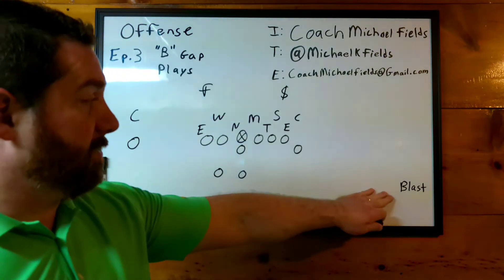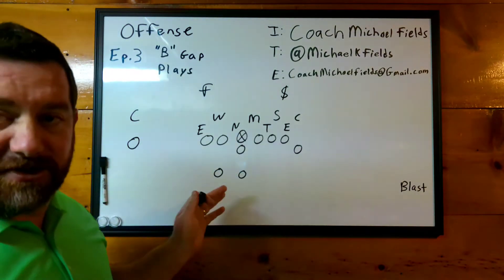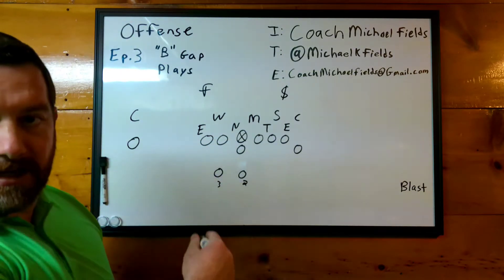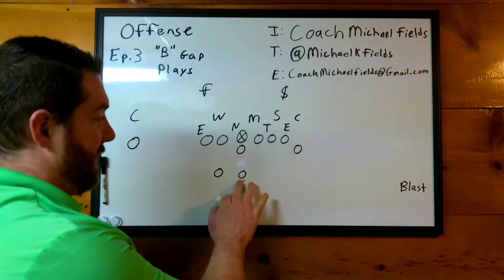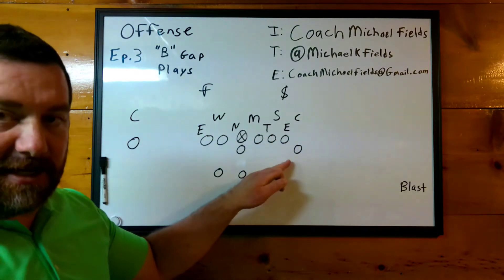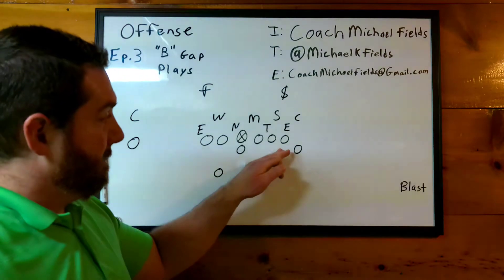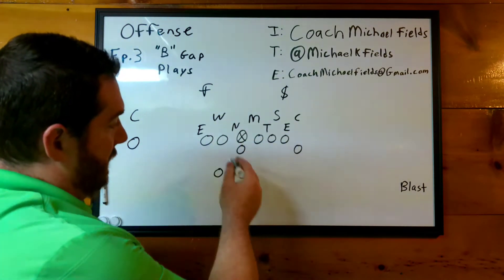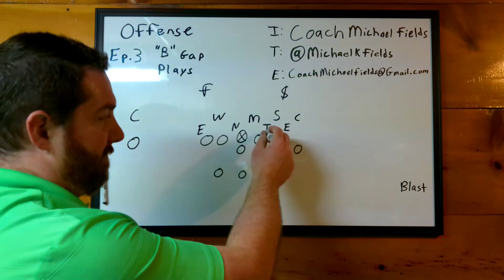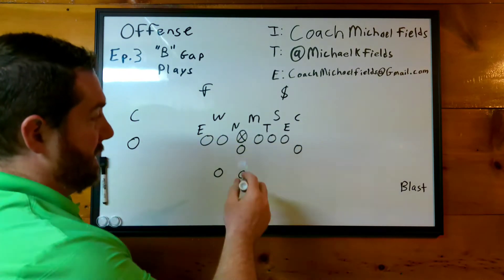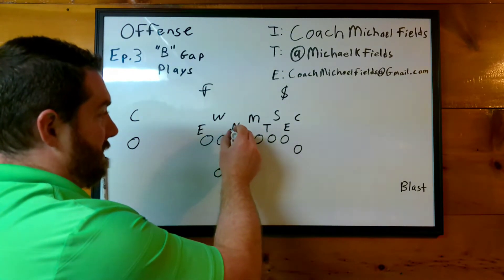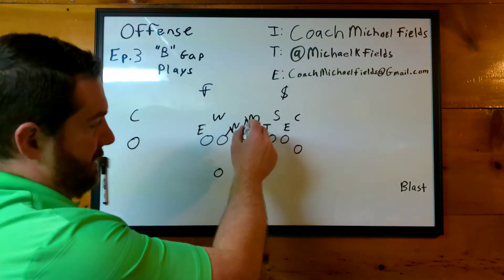Still going B gap, still running blast — now we're out of more of an under-center traditional wing-T look. Most teams it's going to be our two back; this might be a three, an A, or a B depending on how you number guys. Strength is to the right, kind of flipped from the last way we drew it up with the split backs. So we've got strong right, and we're going to have to run this to our left — this is going to be a 23 blast. Center's got an easier angle now on this A gap.